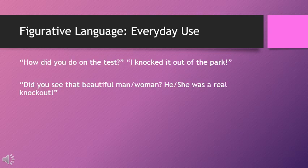A couple more examples: 'How did you do on the test?' — 'I knocked it out of the park.' Again, an image from baseball, where hitting a ball so powerfully that it goes out of the park — not just a home run, but outside the bounds of the ballpark itself — shows comparatively how well you did on the test. Or, 'Did you see that beautiful person? They are a real knockout.' The idea of a knockout from boxing — hit so strong it knocks you unconscious — just like seeing that beautiful person was so powerful it was as though you were knocked out.